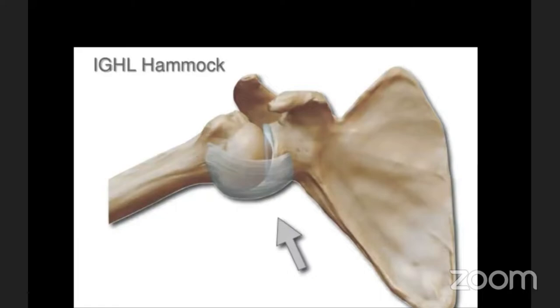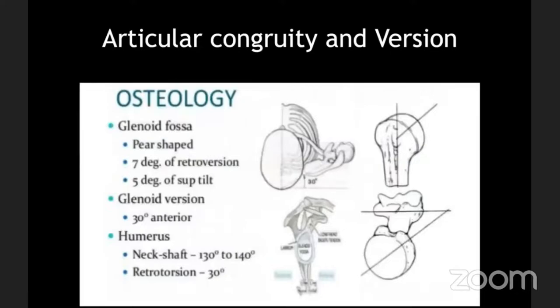If there is disruption of the inferior glenohumeral ligament, you get inferior subluxation that then translates anteriorly — that is the mechanism of anterior instability. The glenoid is pear-shaped, with a globular humeral head articulating at approximately 7 degrees of retroversion and 5 degrees of superior tilt. Since the humeral head is bigger than the glenoid, you get a lot of movement like circumduction, but at the expense of stability.